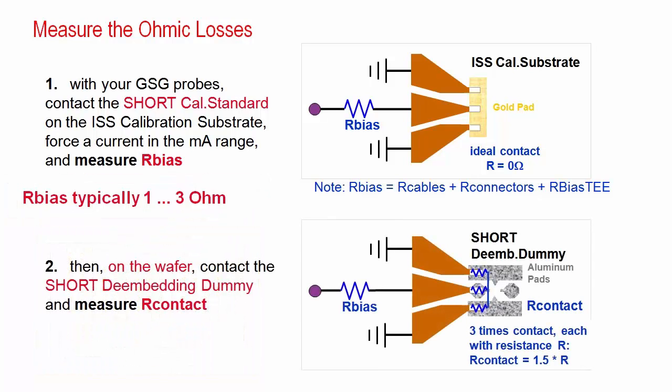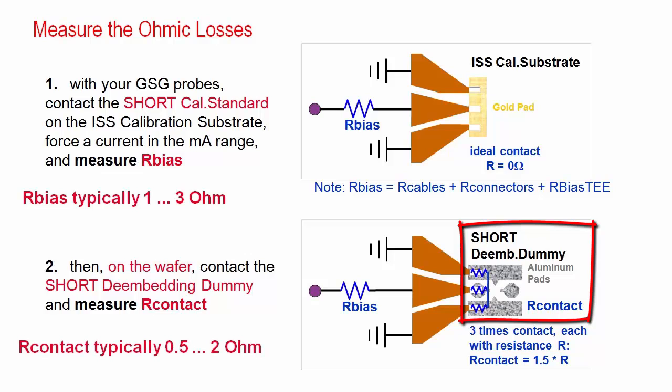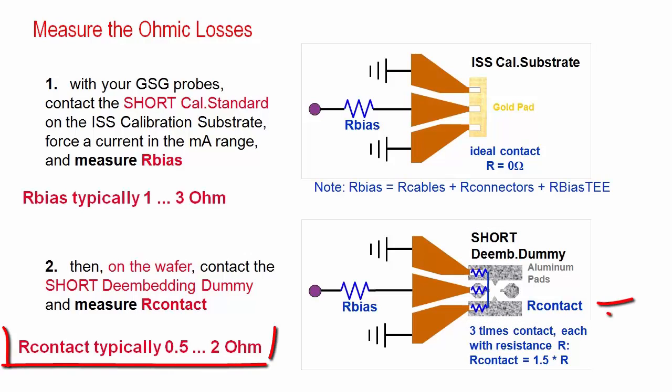In step two, we connect the GSG probe to the de-embedding short dummy on the wafer and measure the resistance once again. With our bias known from before, we get a typical probe tip to wafer resistance between 0.5 ohm and 2 ohm, depending on the aluminum quality on the wafer. We save these resistance values for later use in the device modeling.